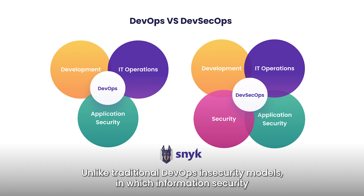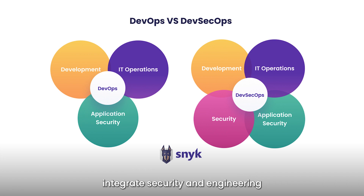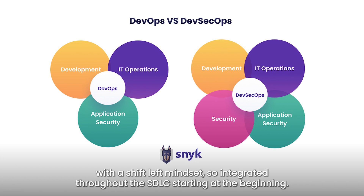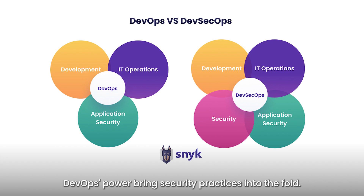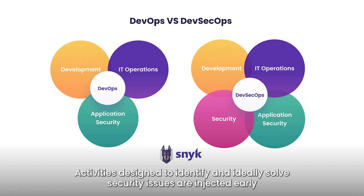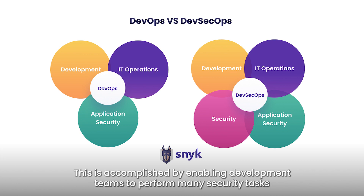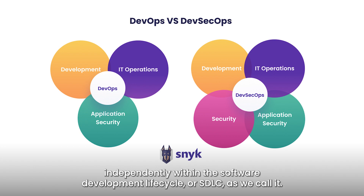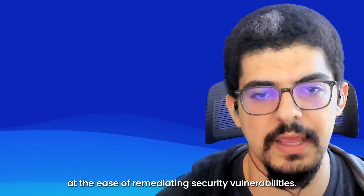Unlike traditional DevOps and security models, in which information security objectives are inserted at the end of the software cycle, DevSecOps integrates security and engineering with a shift-left mindset, integrating it throughout the SDLC starting at the beginning. DevSecOps is a movement that harnesses DevOps's power, bringing security practices into the fold. Activities designed to identify and ideally solve security issues are injected early into the lifecycle of application development rather than after a product is released. This is accomplished by enabling development teams to perform many security tasks independently within the SDLC.